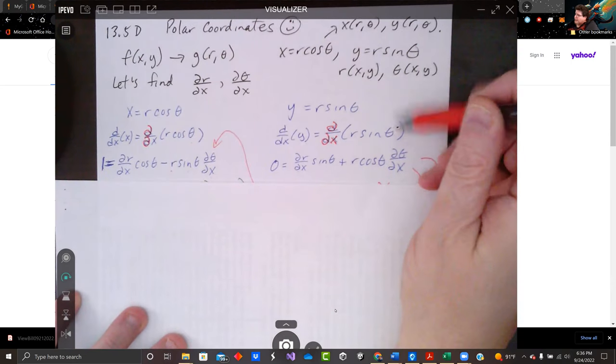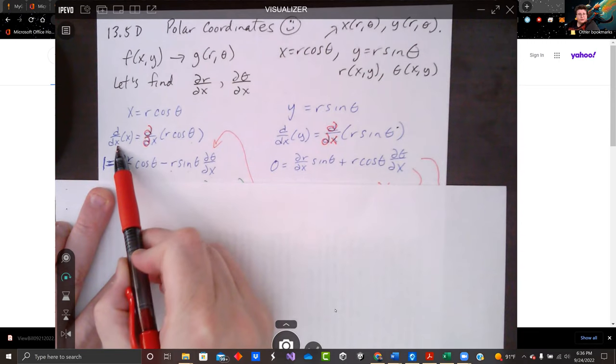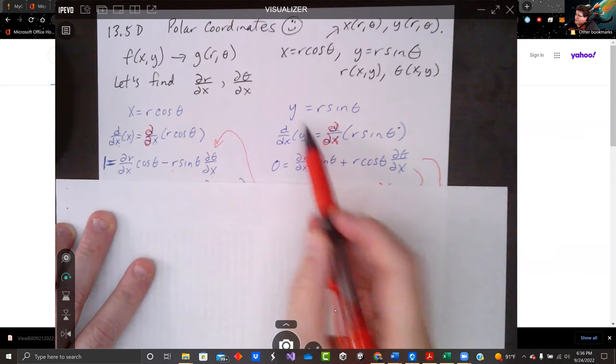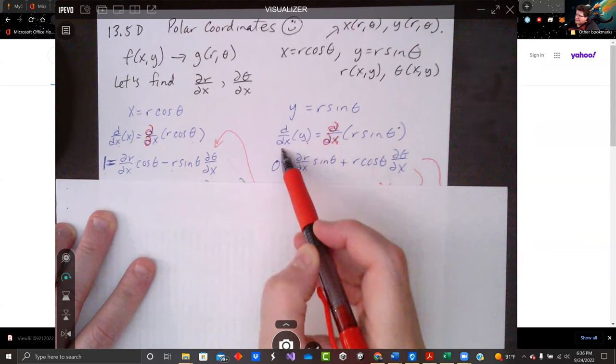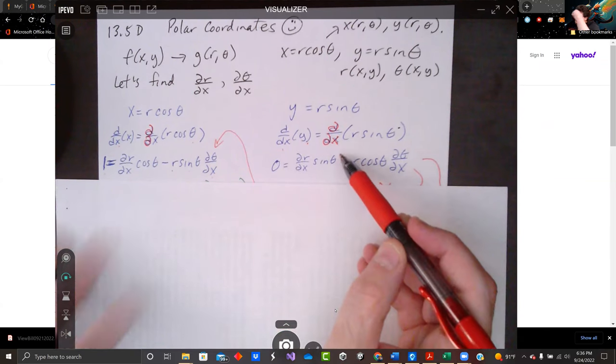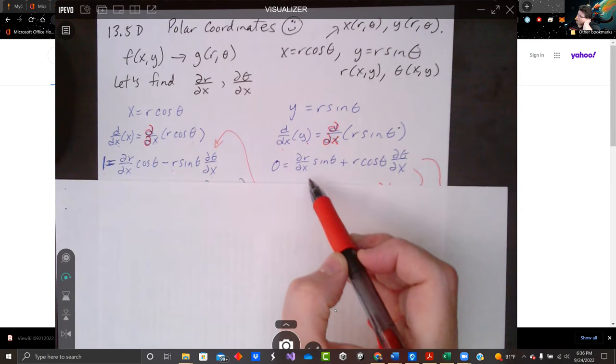Do the same thing with y. And the partial of x with... or the derivative of x with respect to x is just one. That's important. The derivative of y with respect to x is just zero. And then we do the partial of x for r and sine theta.